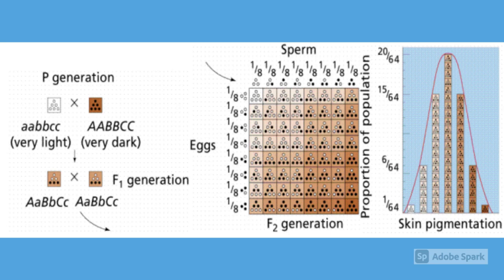Parents having a dominant homozygous and recessive homozygous genotype will produce offspring of intermediate color in the F1 generation. In the F2 generation, two triple heterozygous parents will give rise to varying phenotypes ranging from very dark to very light.